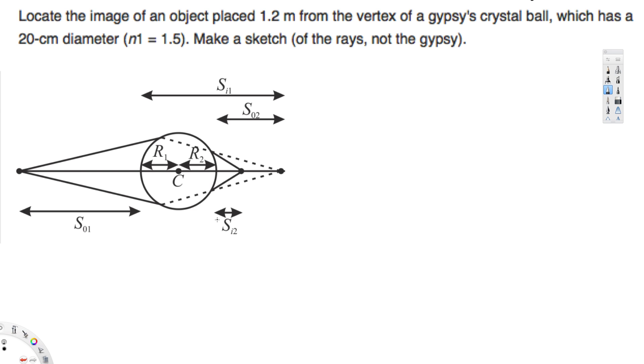Hey, what's going on guys, let's look at this problem right here. This question is asking: locate the image of an object placed 1.2 meters from the vertex of a gypsy's crystal ball which has a 20 centimeter diameter. Make a sketch. The sketch is already here.